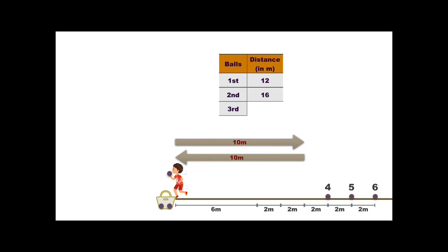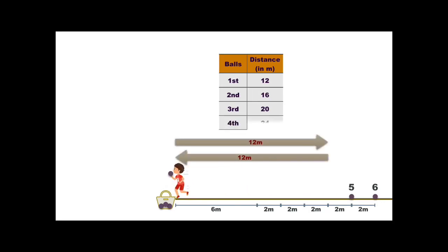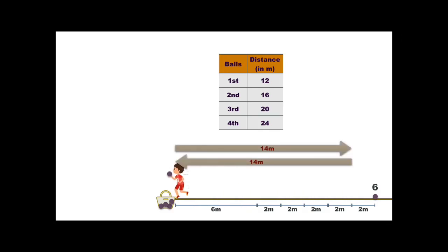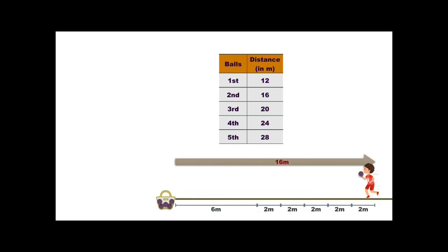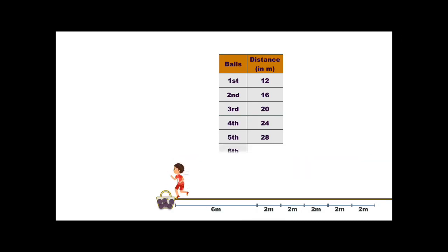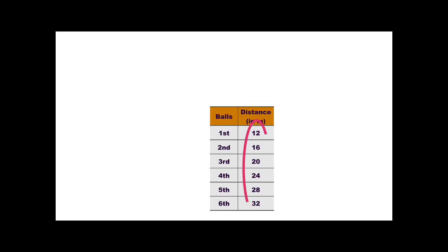Similarly, he goes for the fourth, fifth, and sixth balls. For the last ball, he has covered a distance of 32 meters. We will be focusing on these numbers — 12, 16, 20, ... 32 — to study Arithmetic Progression.